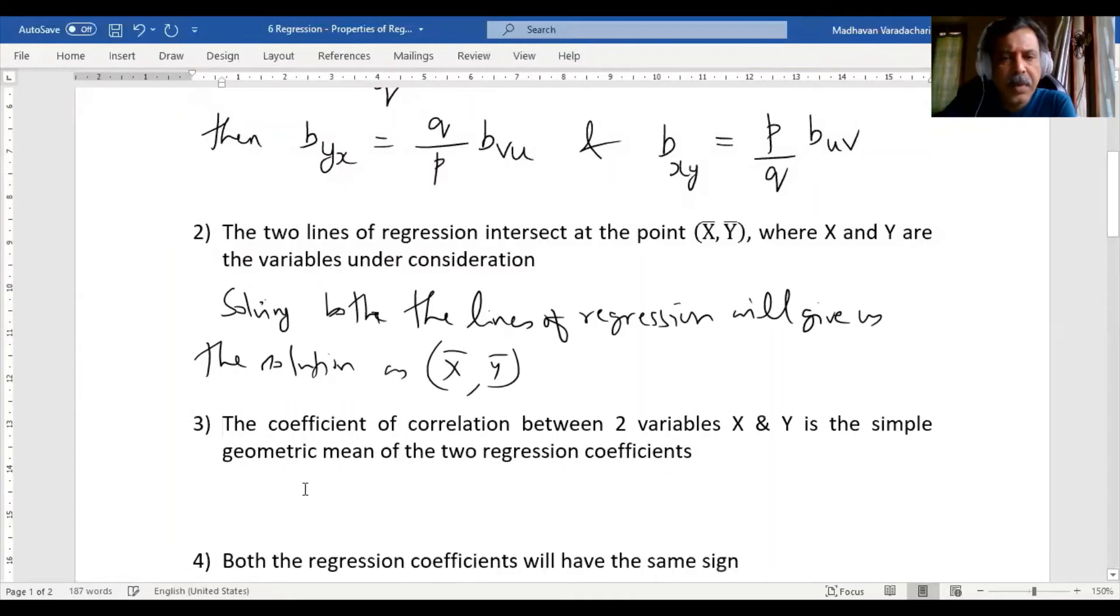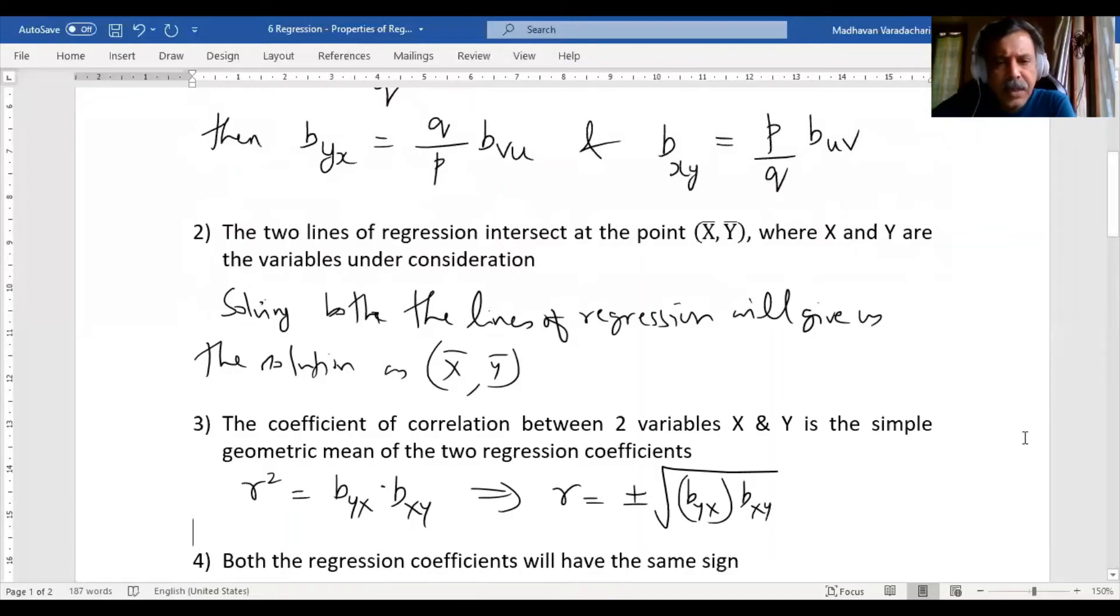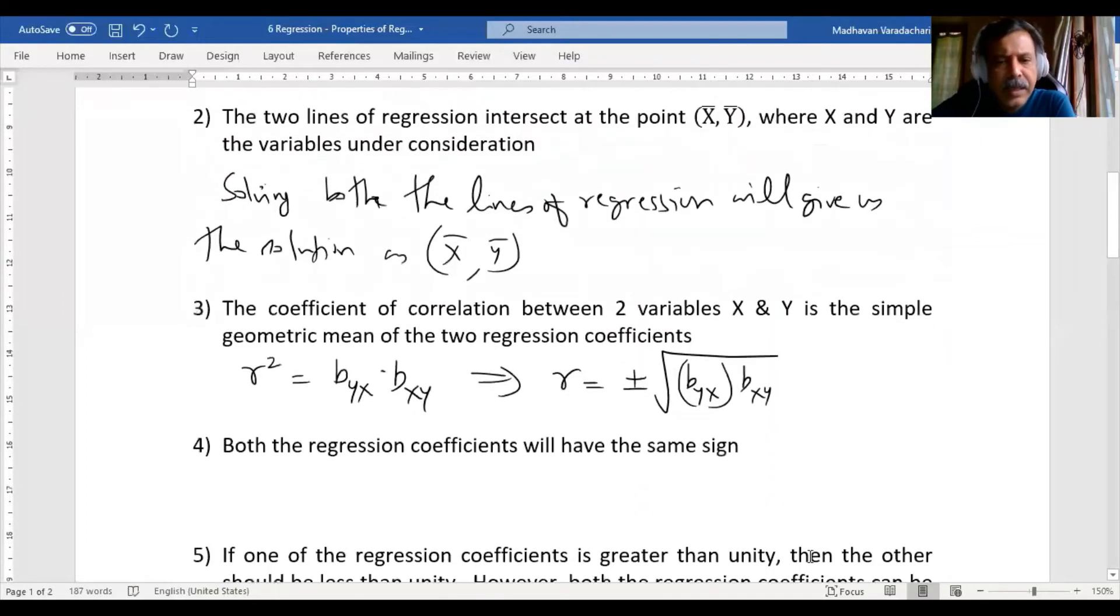The third property: the coefficient of correlation, this we had already seen in our previous video. It says r² = b_yx × b_xy, which means r will be the square root of b_yx into b_xy. We'll see subsequently whether it will be positive or negative.